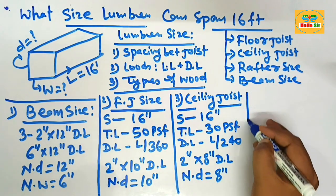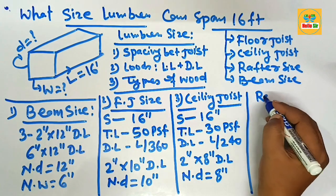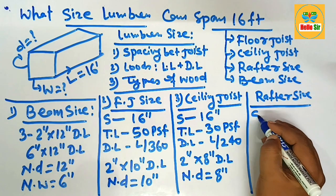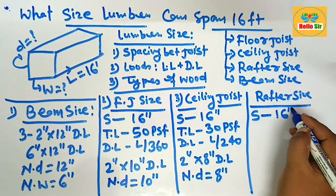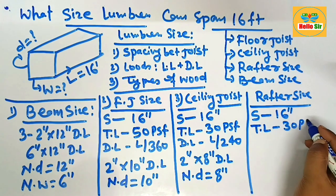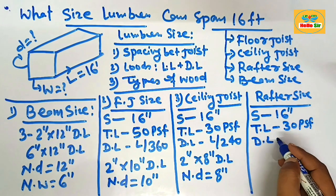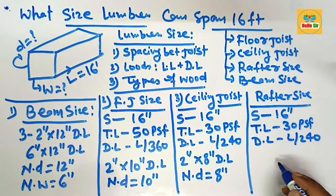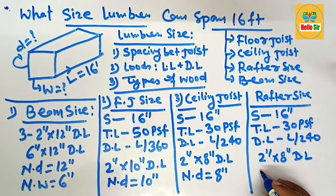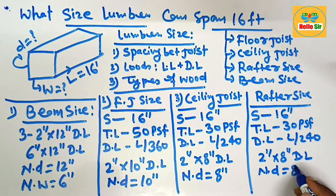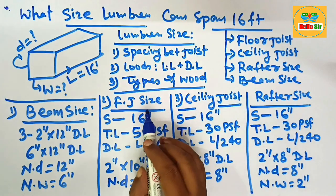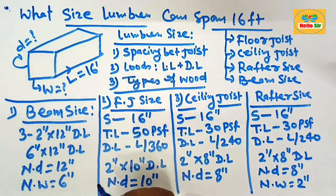You can use 2-inch by 8-inch dimensional lumber as ceiling joist to span 16 feet, with a nominal depth of 8 inches. For rafter size required to span 16 feet, the conditions are similar: spacing of 16 inches on center, total load of 30 pounds per square foot, and deflection limit of L/240. You can use 2-inch by 8-inch dimensional lumber as rafter, with a nominal depth of 8 inches and nominal width of 2 inches. This size of lumber can span a 16-foot distance.